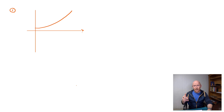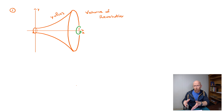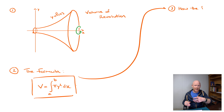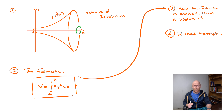To make sure we really understand what we'll be covering, we'll start by illustrating what a volume of revolution actually is, then state the formula for calculating a volume of revolution, explain how that formula is derived, and work through an example to show how the formula can be used.